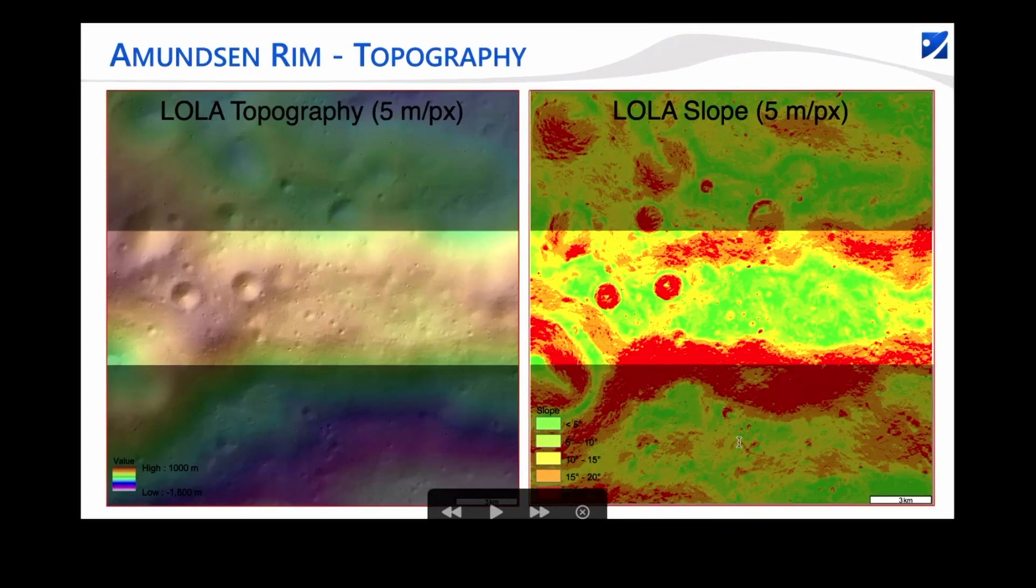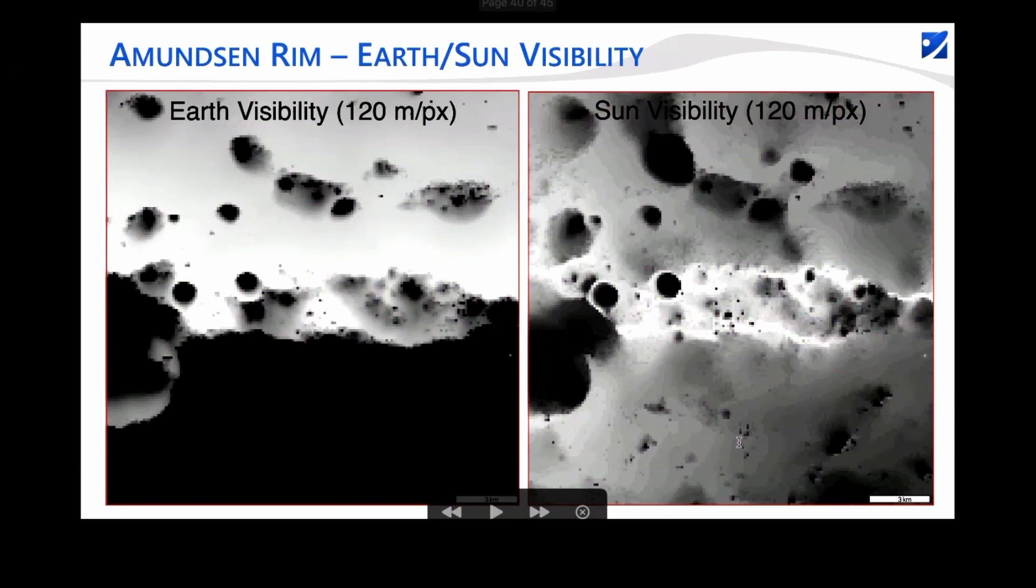The next steps now that Lucas has done the one to 100,000 scale map is to zero in on the two Artemis landing areas and do one to 8,000 scale maps that are similar to what Hannes has done for the Shackleton Connecting Ridge in terms of mapping the craters and also the regolith textures in those regions, and also looking at the slope and the topography. Having a more mission-related analysis of the sun visibility and earth visibility and design then actually some potential EVAs for missions to those locations. That's basically the next step of what Lucas is going to be working on.